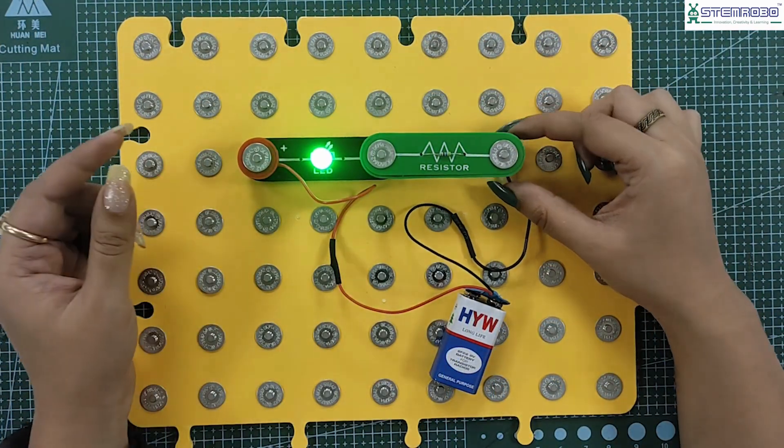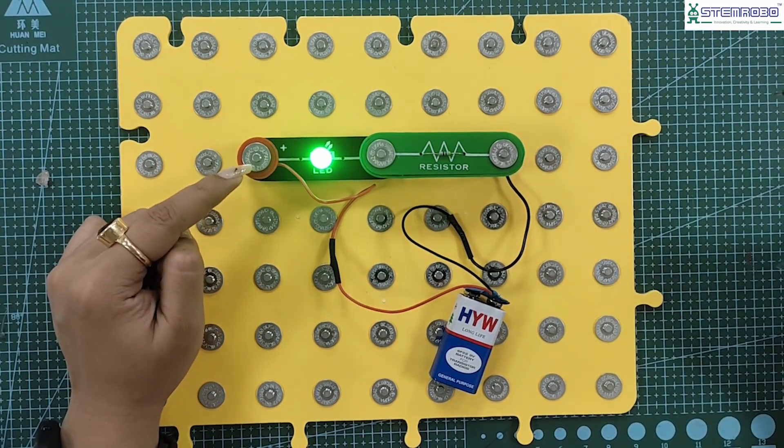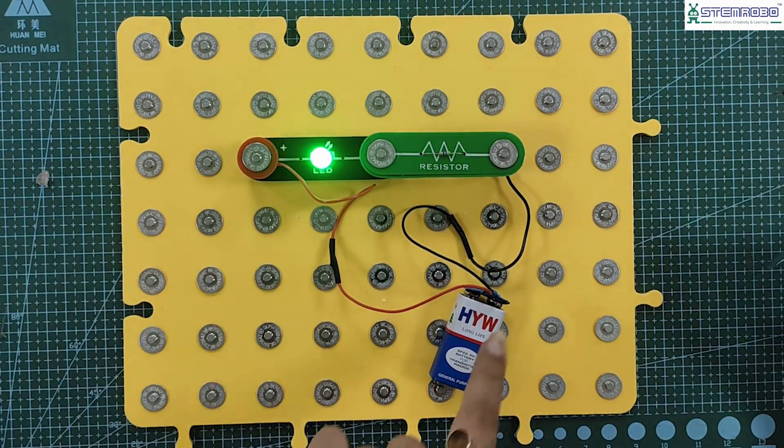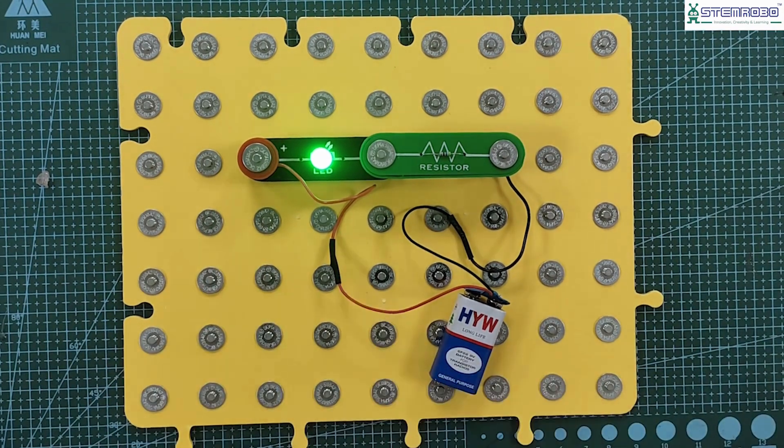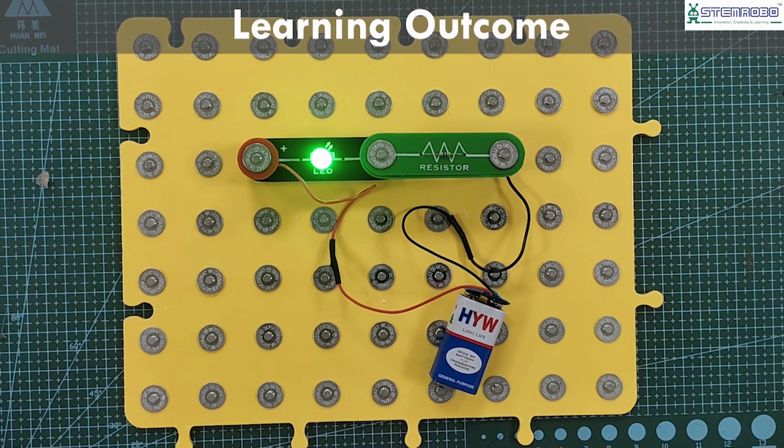I have connected the negative terminal with the resistor and the positive terminal with the LED. You can see that the circuit is complete and the LED is glowing. So the learning outcome of this activity is we learned about how to glow a bulb.